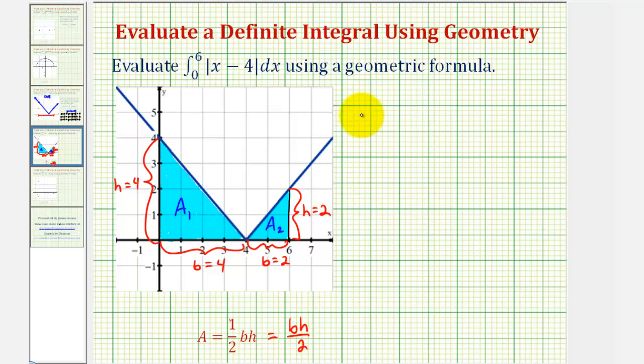So now we know that the integral of the absolute value of x minus four, on the interval from zero to six, will be equal to area sub one plus area sub two.